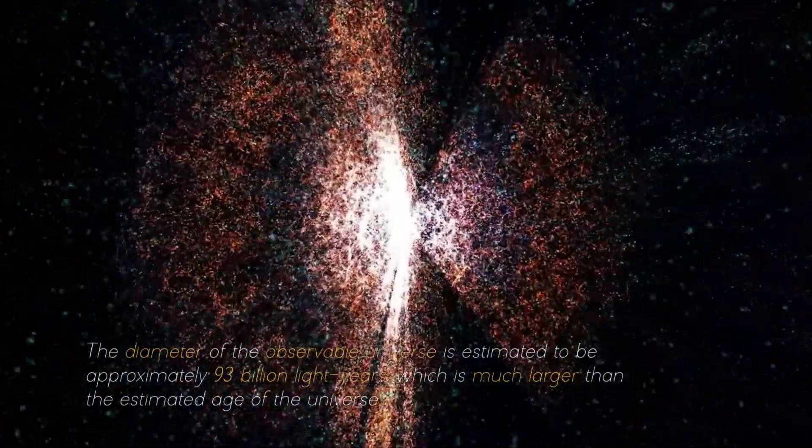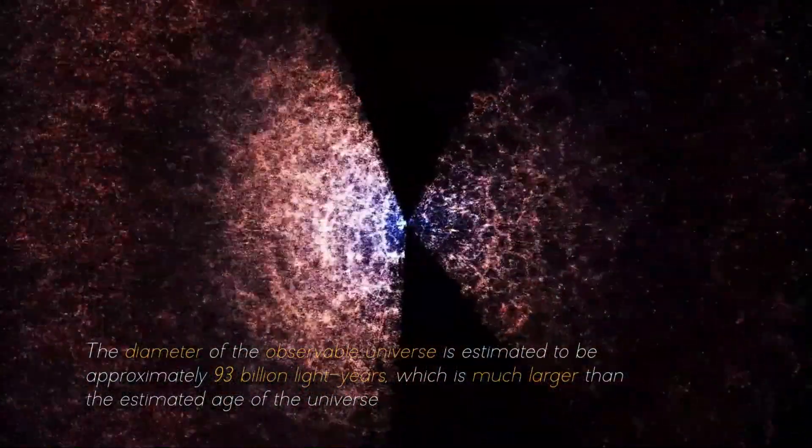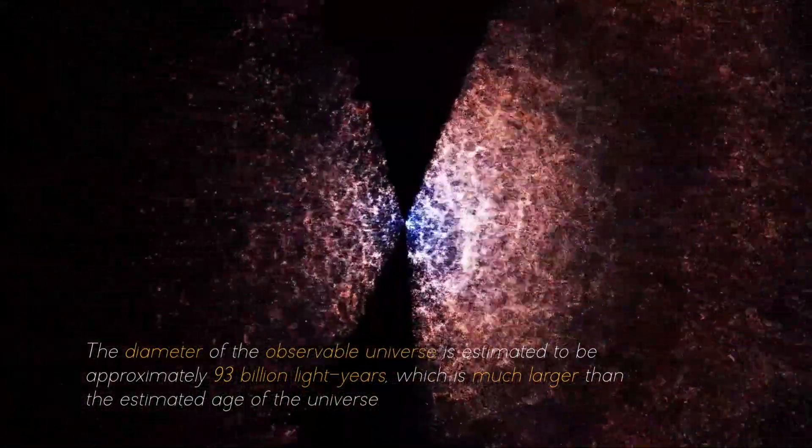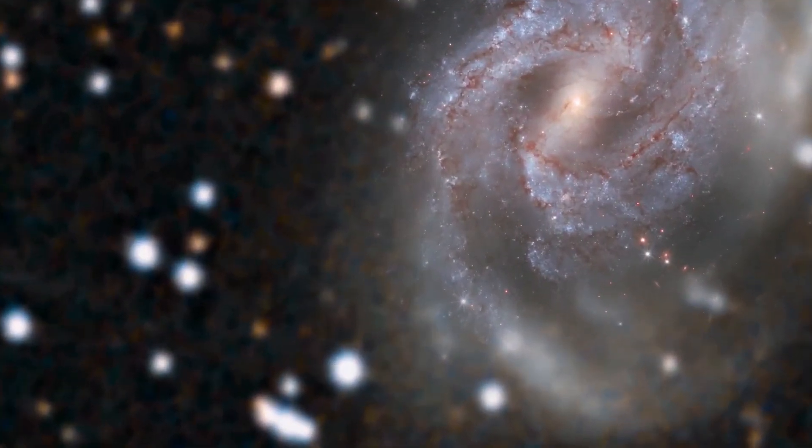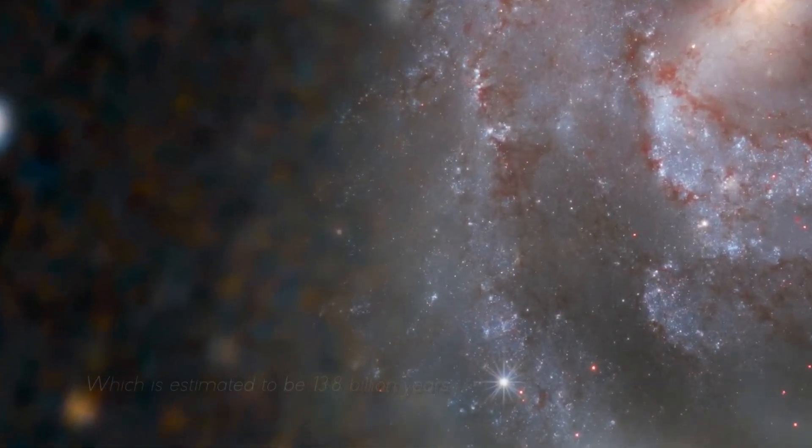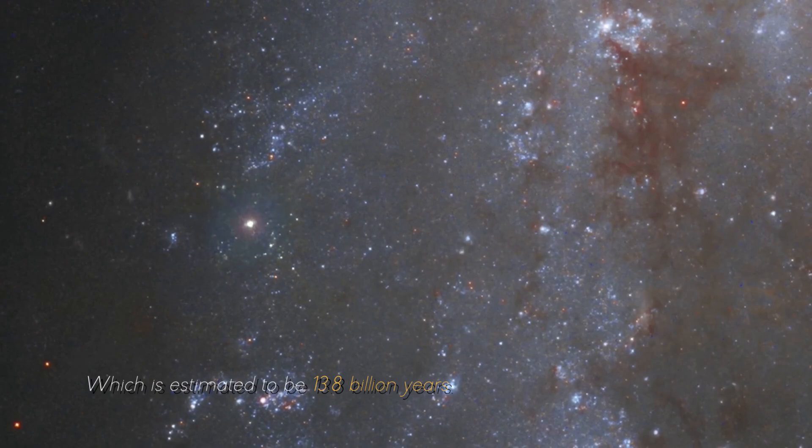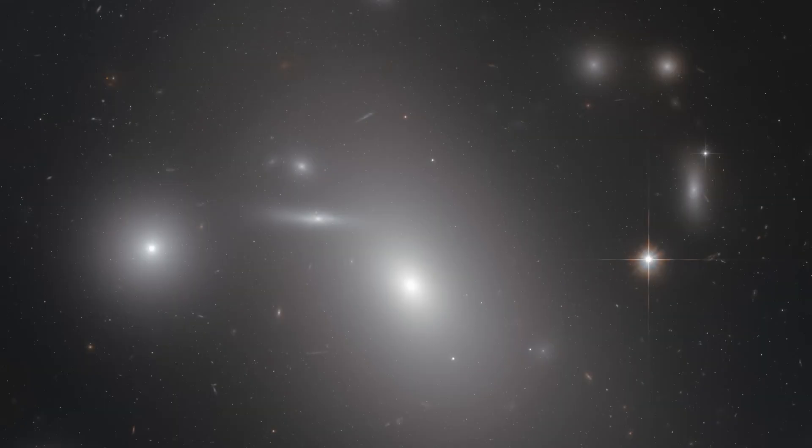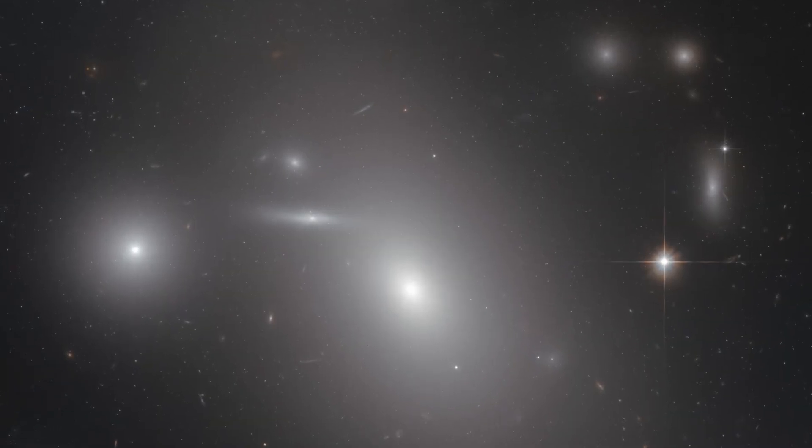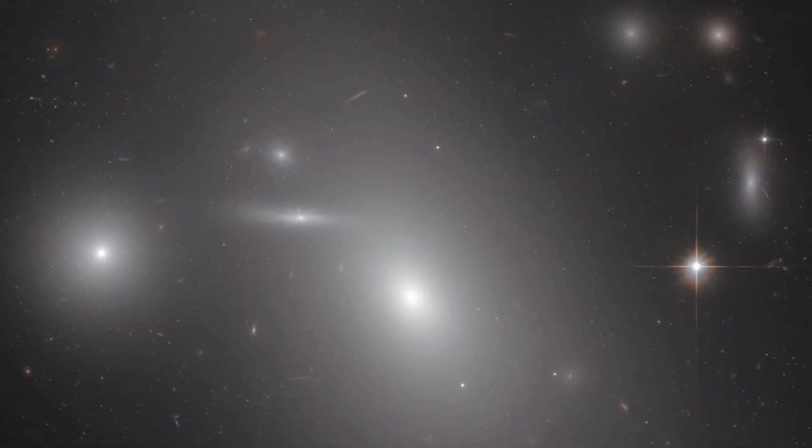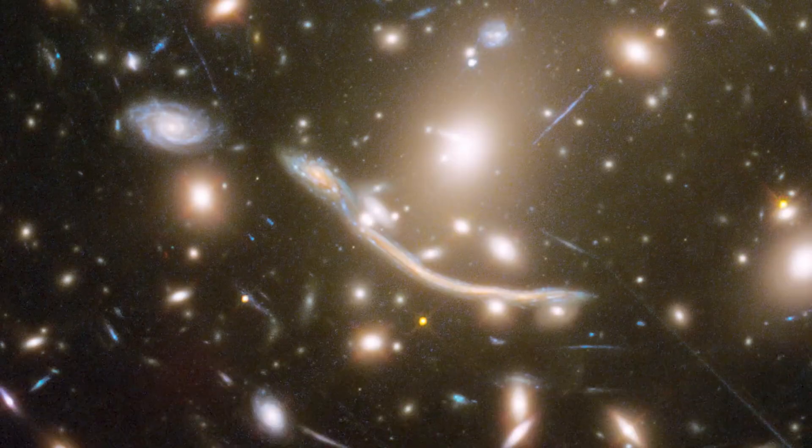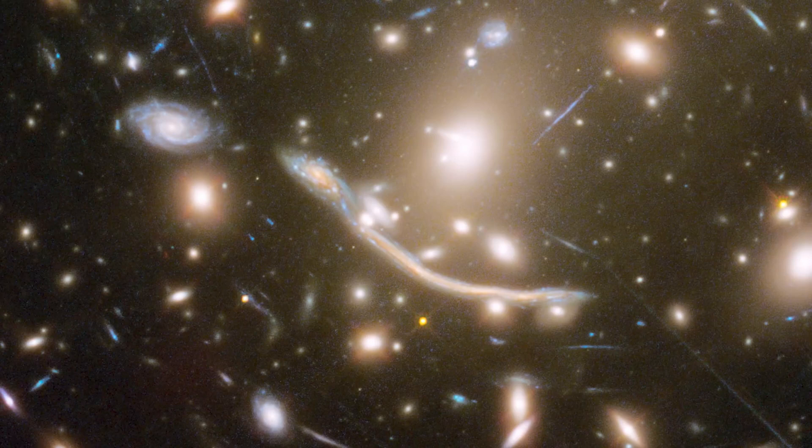The diameter of the observable universe is estimated to be approximately 93 billion light years, which is much larger than the estimated age of the universe, which is estimated to be 13.8 billion years. This discrepancy is because the expansion of the universe has caused objects that were once close together to move away from each other, and light from those objects has required more time to reach us.